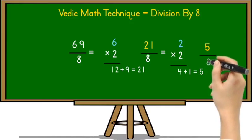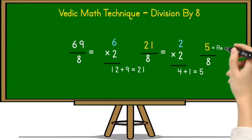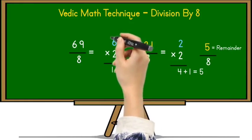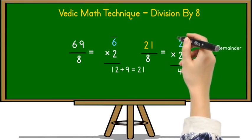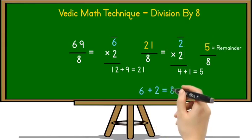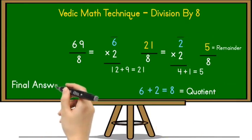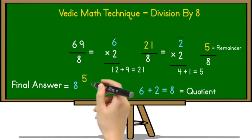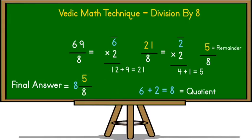Now in the next step, we take this 5 and divide it by 8, but it is not possible because 5 is less than 8. So this 5 will be the remainder. To find the quotient, we add 6 and 2 together. So 6 plus 2 equals 8, and this is the quotient. The final answer is 8 with remainder 5 over 8, where 8 is the quotient and 5 is the remainder. If we divide 69 by 8, you will get quotient 8 and remainder 5.